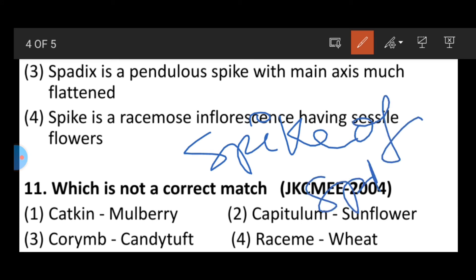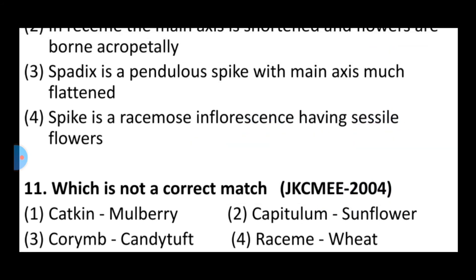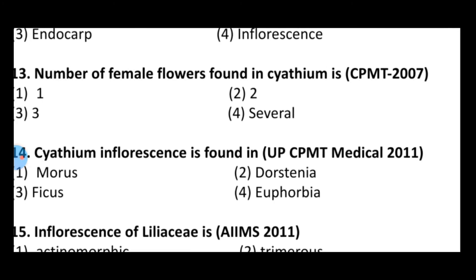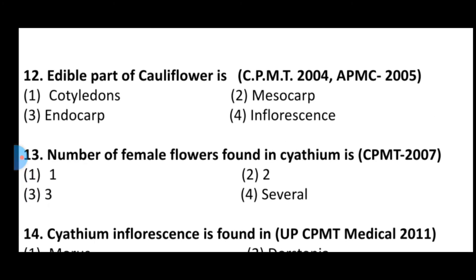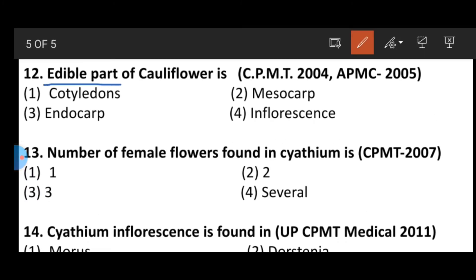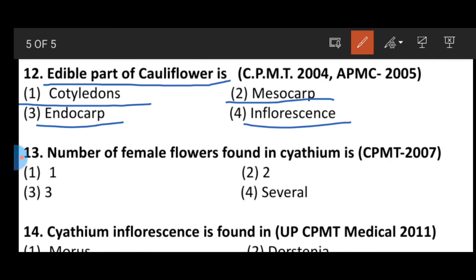Question number twelve: The edible part of cauliflower is — option one: cotyledon, option two: mesocarp, option three: endocarp, option four: inflorescence. The correct answer is inflorescence, which is the edible part of cauliflower.